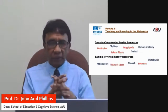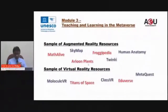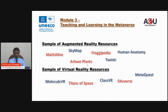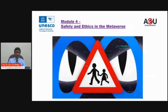What you see on the screen are some samples of virtual reality and augmented reality assets, all available on the web. Samples of augmented reality resources include Math Alive, SkyMap, Froggypedia, Human Anatomy, Twinkie, and others. Samples of virtual reality resources include Molecule VR, Titans of Space — about space and other planets — Class VR, Universe, and Meta Quest.